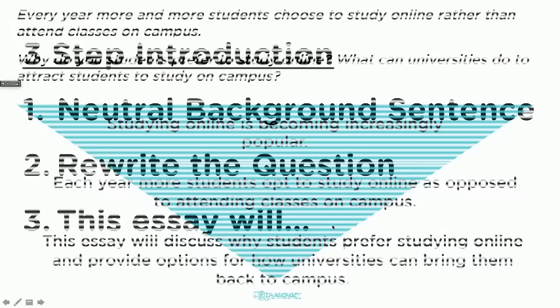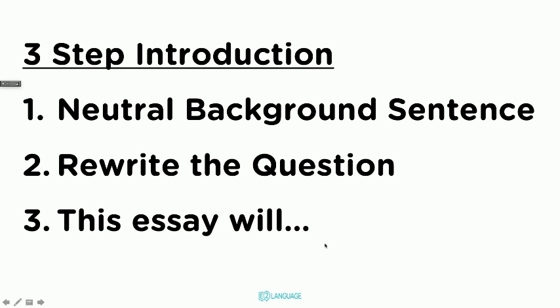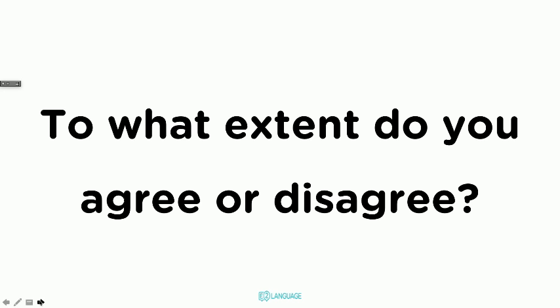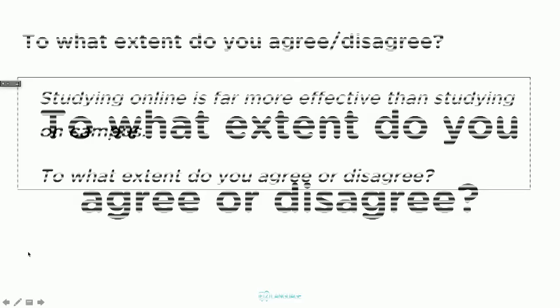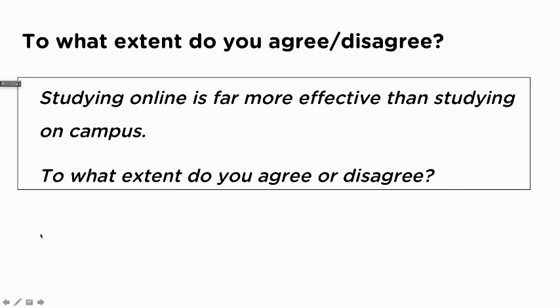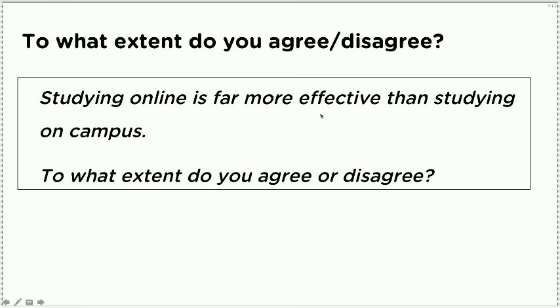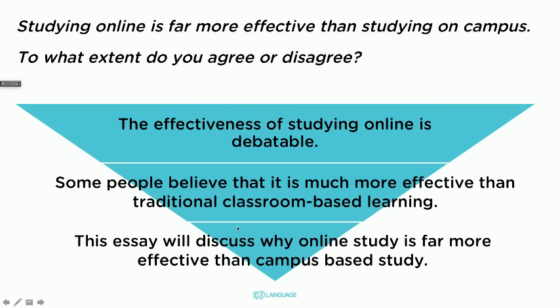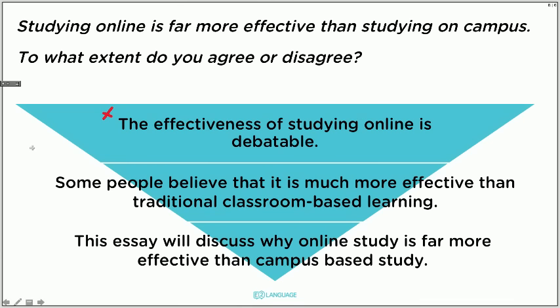Three-step introduction — neutral background sentence, rewrite the question, 'this essay will.' This time we'll apply it to the 'to what extent do you agree or disagree' question type. 'Studying online is far more effective than studying on campus. To what extent do you agree or disagree?' This time it's talking about effectiveness — that's the key term. Broad background neutral statement: 'The effectiveness of studying online is debatable.' Rewrite the question: 'Some people believe that it is much more effective than traditional classroom-based learning.' Third sentence: 'This essay will discuss why online study is far more effective than campus-based study.'